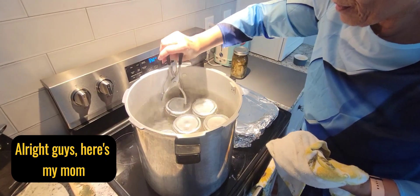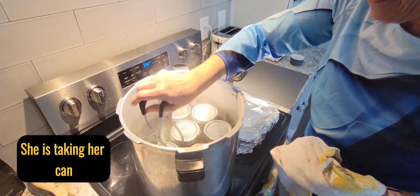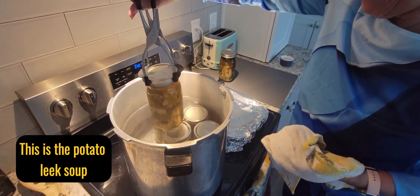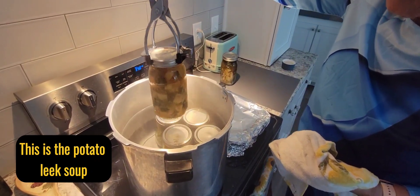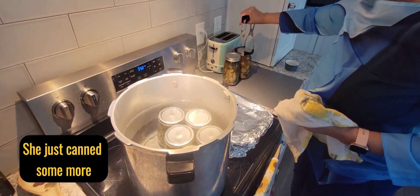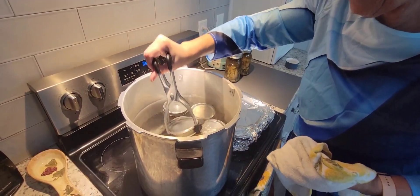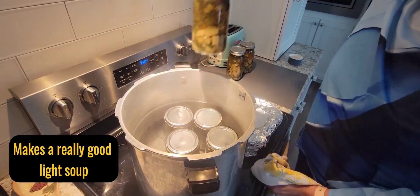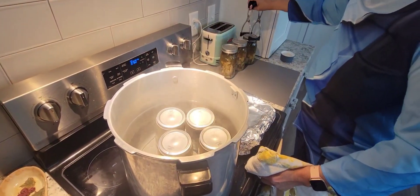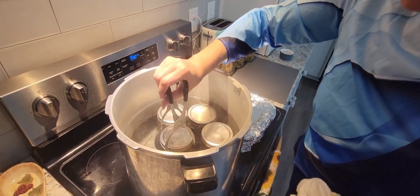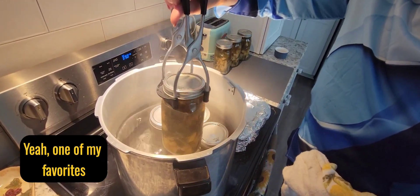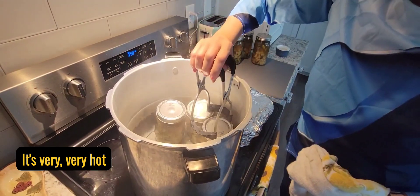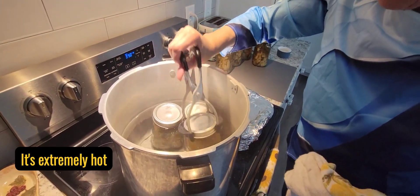Alright guys, here's my mom. She's taking her canned soup out. This is potato leaf soup. She just canned seven quarts. It makes a really good, light soup, but very healthy. We love it. Cheryl loves it. Yeah, one of my favorites. It's very, very hot. It's extremely hot.